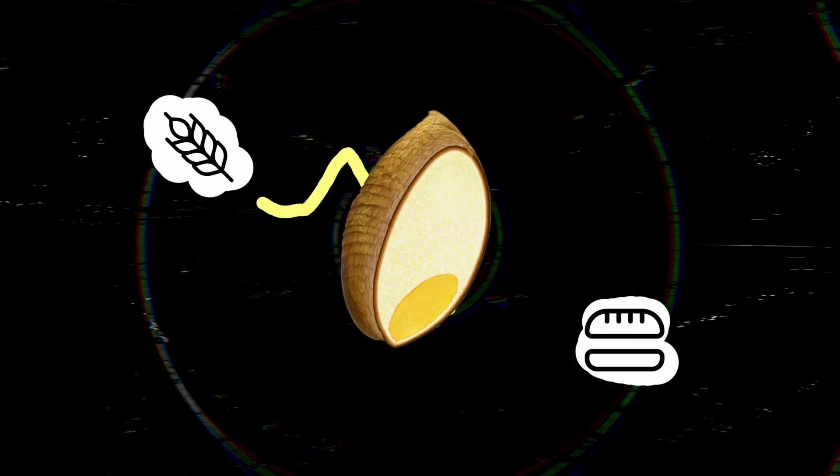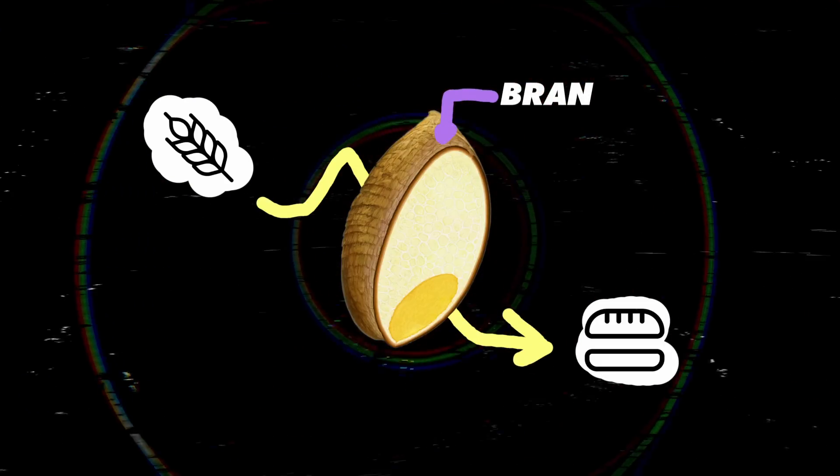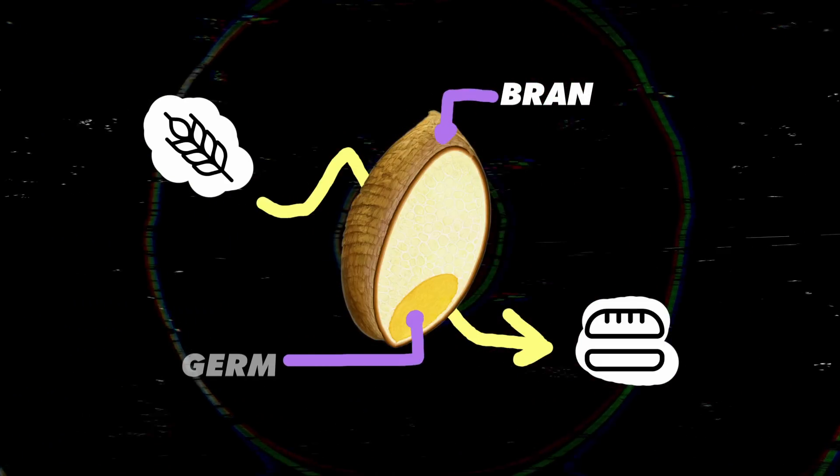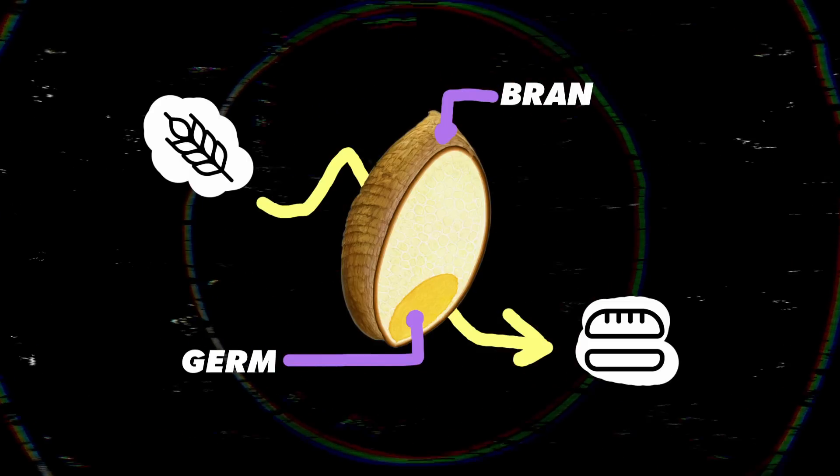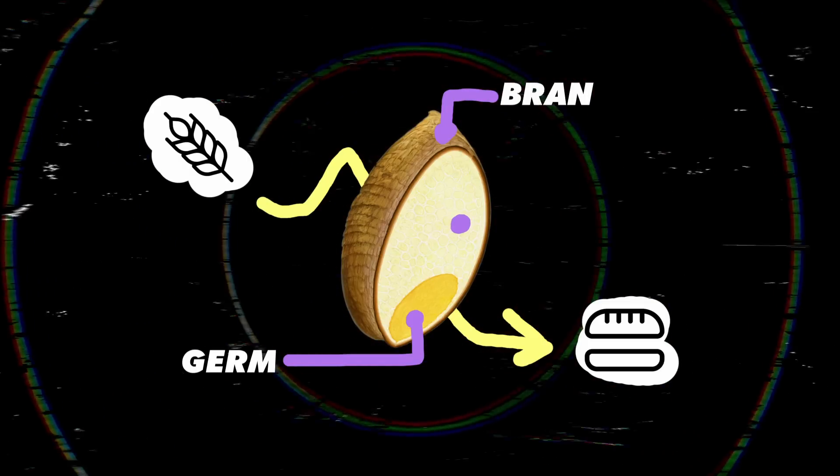There are three main parts of the kernel. The bran, which effectively acts as the fiber of the grain. The germ is the embryo of the grain, the part that grows into a new plant. It holds and provides a lot of vitamins and minerals.